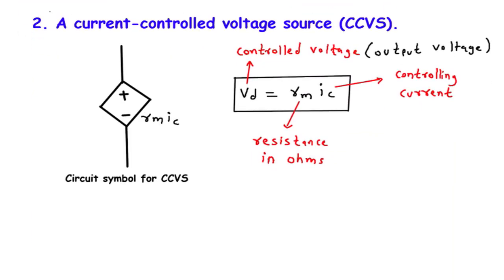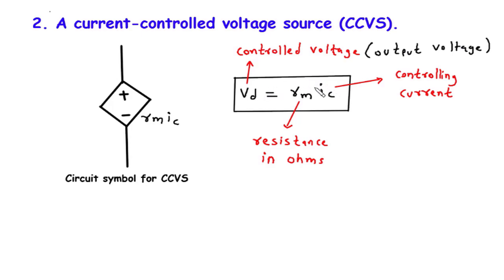We will now learn about the CCVS circuit symbol and understand how the voltage across it is determined by the controlling current in another part of the circuit. A CCVS is a type of electronic component that provides an output voltage that is directly proportional to the controlling current passing through a different part of the circuit. It allows us to create voltage sources whose magnitude is dependent on the current flowing through specific circuit elements.